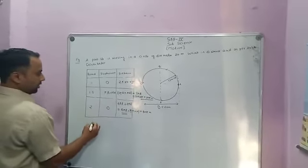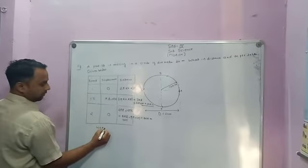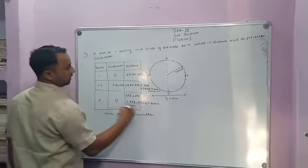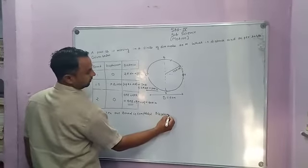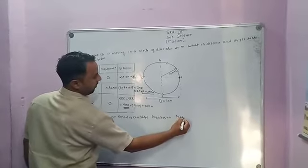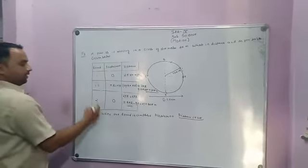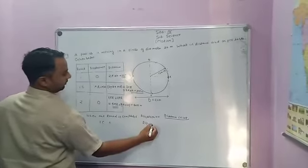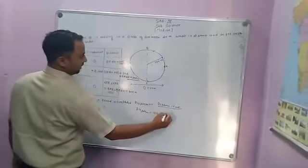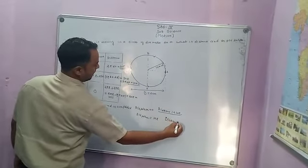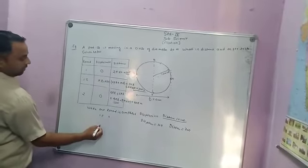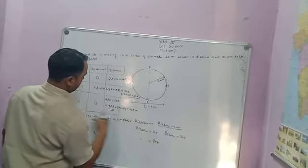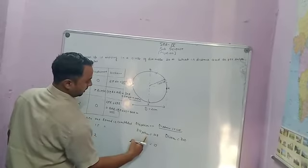To summarize the final answers: for one complete revolution, displacement is zero and distance is 2πr, which is 20π meters. For 1.5 revolutions completed, the distance is 30π meters and the displacement is 20 meters. After two complete revolutions, the distance is 40π meters and the displacement is zero.